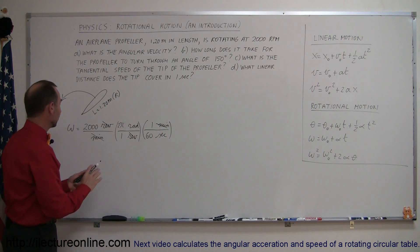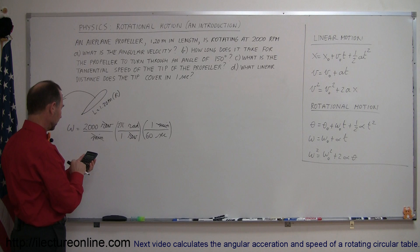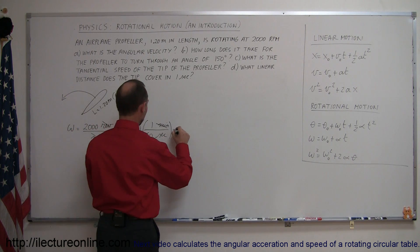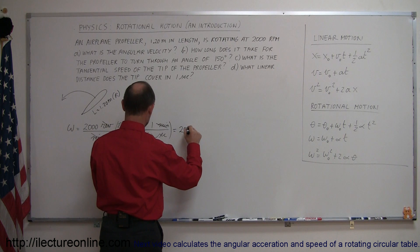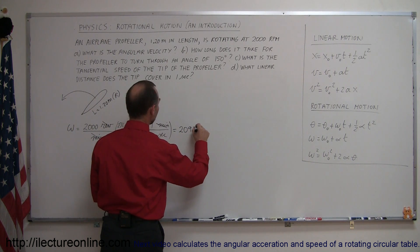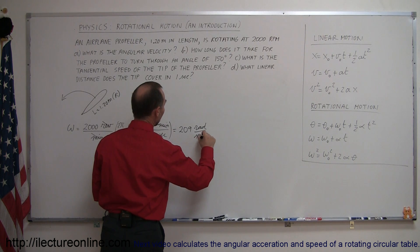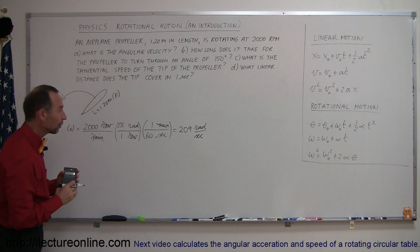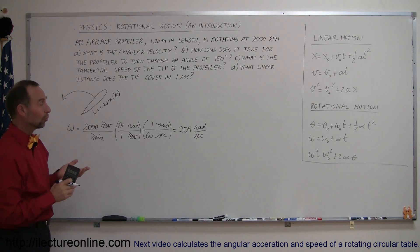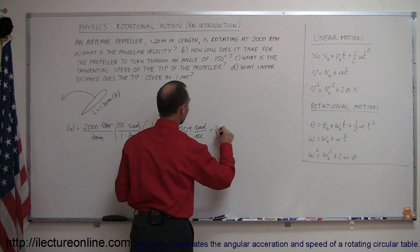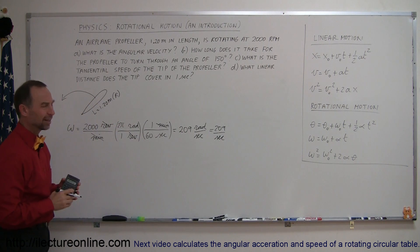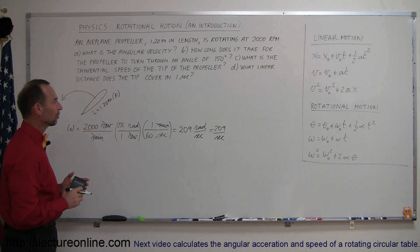Let's grab our calculator and figure out what that is. We have 2,000 times 2 times pi divided by 60, and that gives us 209 radians per second. Radians, being the standard unit for angular velocity, is one of those units you don't really need to mention — you can say this is equal to 209 per second — but for clarity I usually write radians. Either answer is correct.